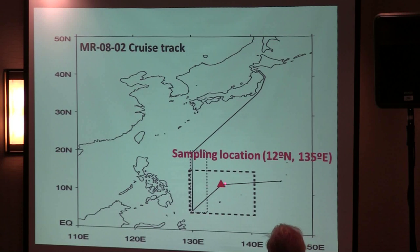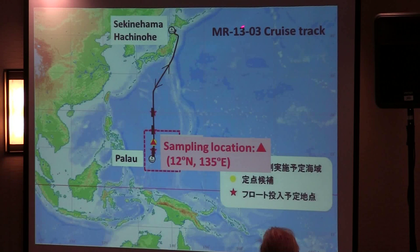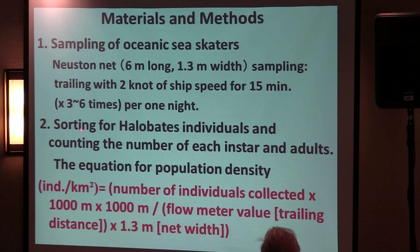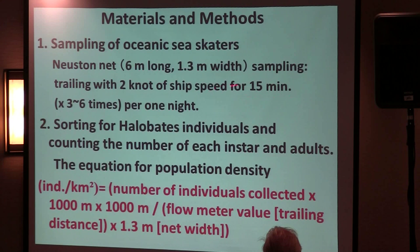We sampled at a fixed location in 2008 and again five years later at the same position. For one month, we collected sea skaters by trawling with a neuston net, trailing at two knots of ship speed for 15 minutes, three or six times per night, then sorting Halobates individuals and counting the number to calculate population density.